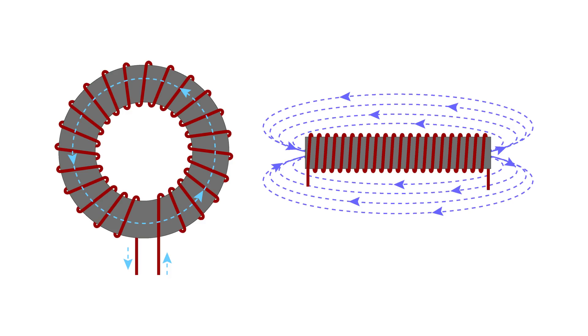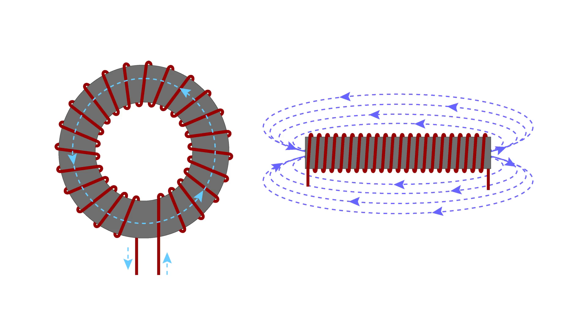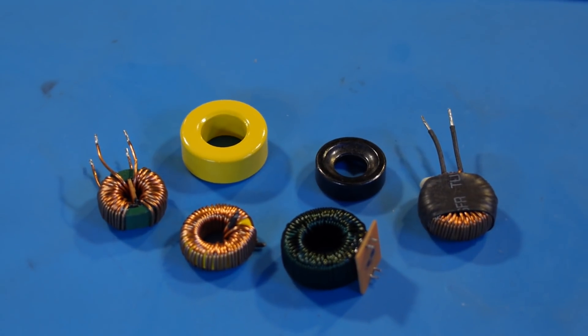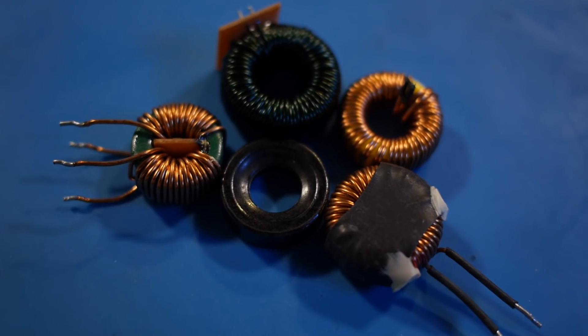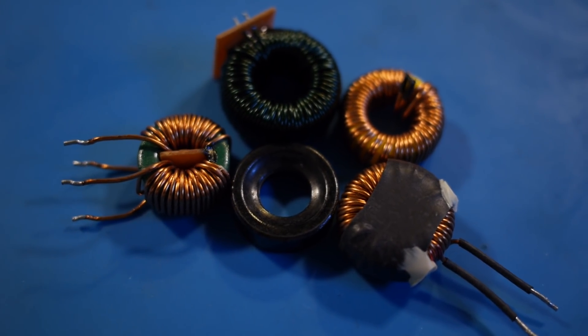We'll start by making our transformer. In the inductors episode, we learned that we get more bang for our buck, or induction for its size, with a toroidal inductor. So let's make one. We'll need a ferrite ring. You can buy one, or salvage one out of another piece of electronics, like a power supply.